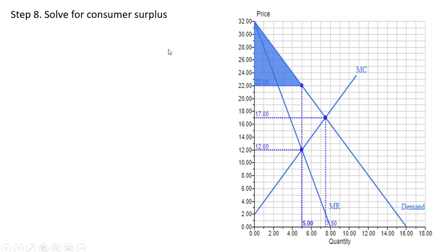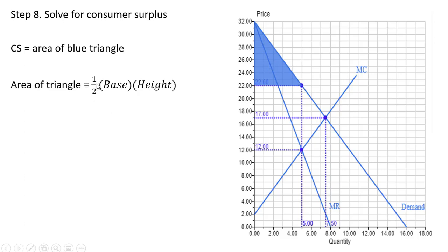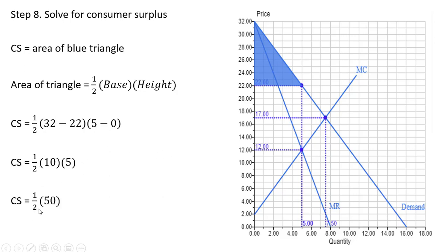Now let's solve for consumer surplus under monopoly. Consumer surplus is the area of the triangle between the demand curve and the price consumers pay of $22, up to the fifth unit purchased. Area of a triangle is one-half base times height. The base is 32 minus 22 equals 10, and the height is 5 minus 0 equals 5. Consumer surplus under monopoly equals $25.